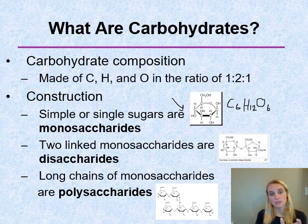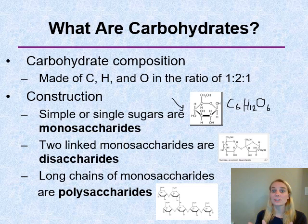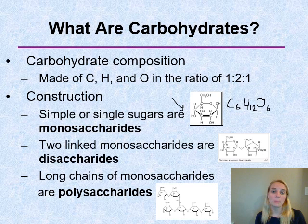When you get two monosaccharides — mono meaning one, saccharide meaning sugar — hooked together, these are called disaccharides, di meaning two. Disaccharides include things like lactose, the sugar in milk, and sucrose, which is table sugar. When you get a whole bunch of monosaccharides hooked together, you get what we call a polysaccharide — poly meaning many. Monomer and polymer are general terms; now that we're specifically looking at carbohydrates, we can call them monosaccharides and polysaccharides.